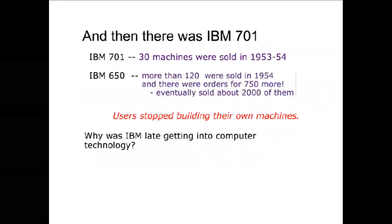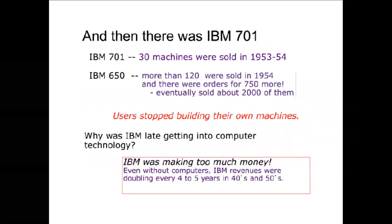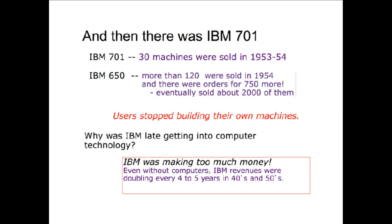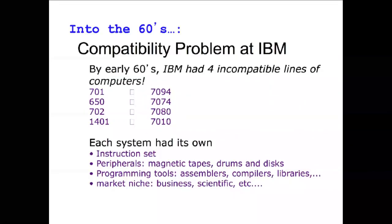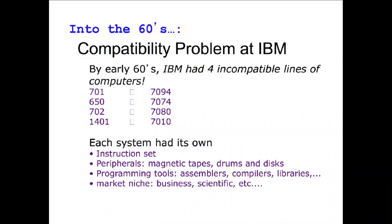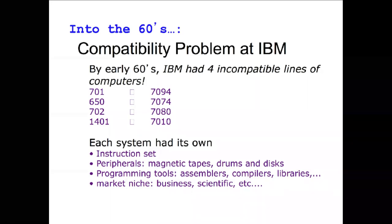IBM got into the game. Before they got into computers, they were making all sorts of electromechanical stuff — sorters, card sorters and such. They were making tons of money on that, and then they were like, oh, computers — should probably look into that. They did have a problem, though: all of their lines were really not compatible. They had their own instruction sets, their own different peripherals, their own assemblers and compilers, and it was just a total mess. You would have to basically rewrite your program if you wanted to move to a different line of computer.